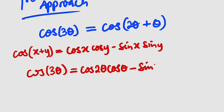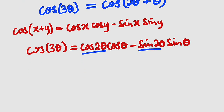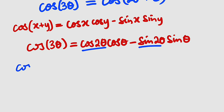Sine of 2 theta, sine of theta. You should remember that this is another double angle. We can write cosine of 3 theta as — for cosine of 2 theta, it is the same thing as cosine squared theta minus sine squared theta.